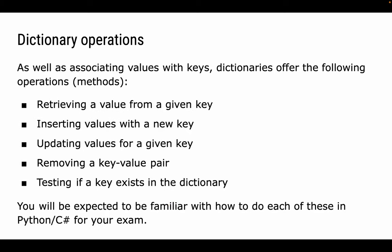So dictionaries allow us to associate values with keys. They also offer the following operations. So these are the things we need to be able to do with a dictionary. We need to be able to retrieve a value from a given key, insert values with a new key, update values for a given key, remove a key-value pair, and test if a key exists in the dictionary. And you will be expected to be able to do all of these things in Python or C sharp or whatever your chosen language is when it comes to your paper one programming exam.